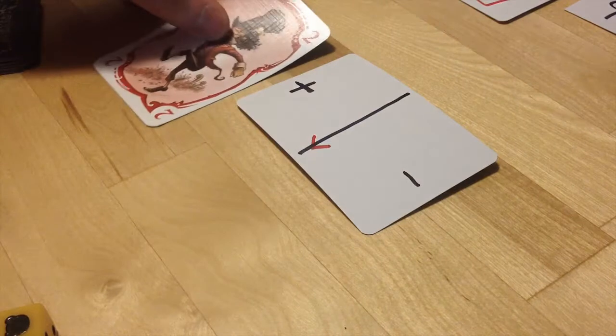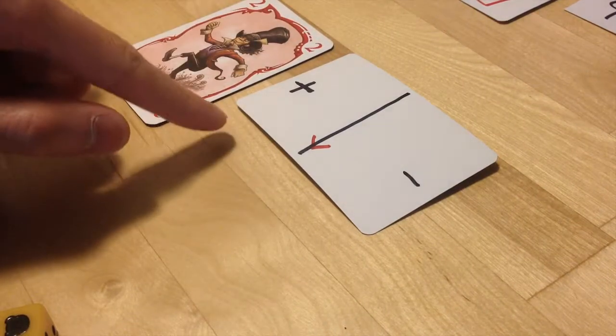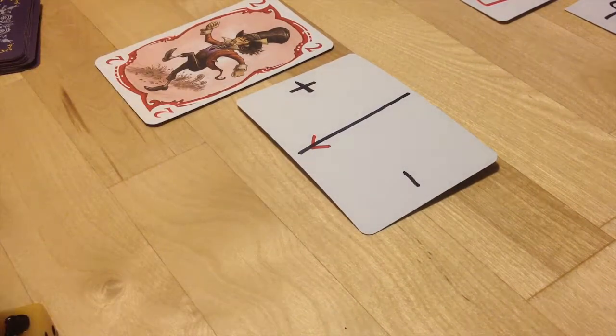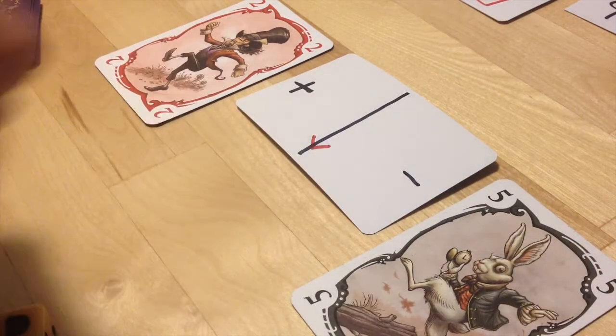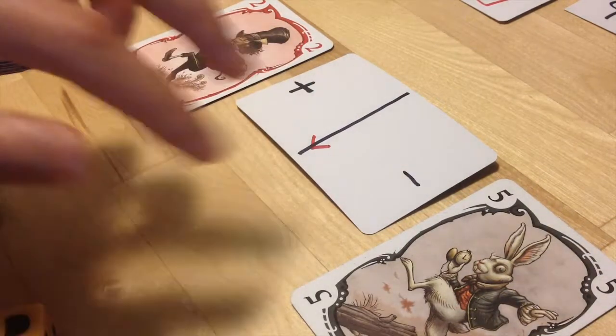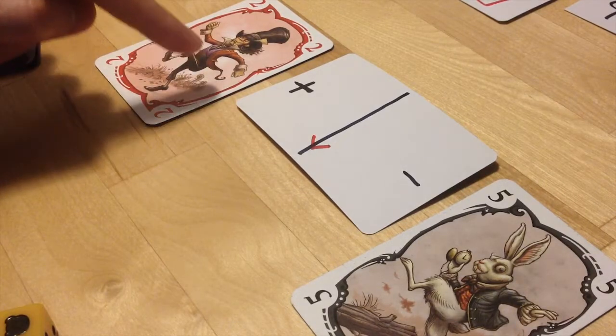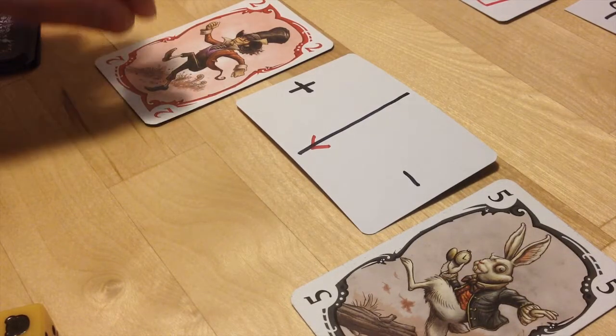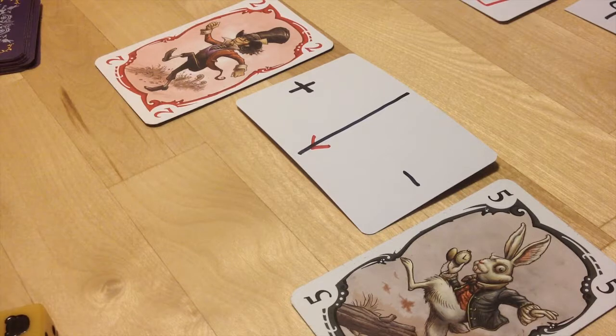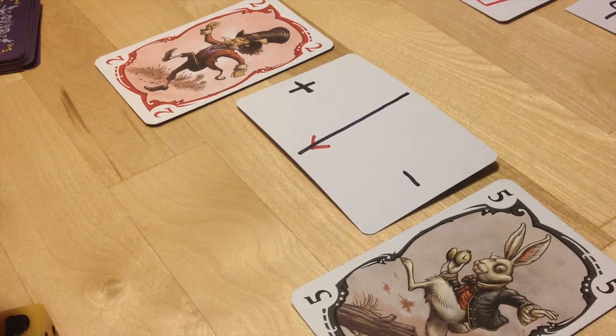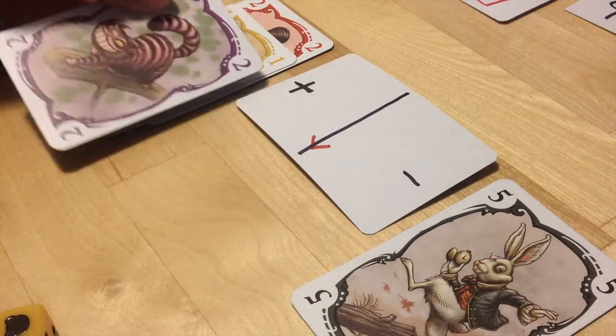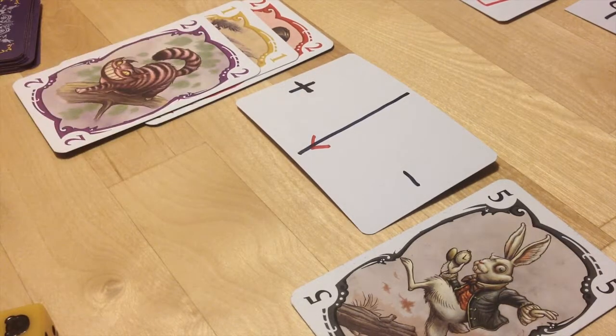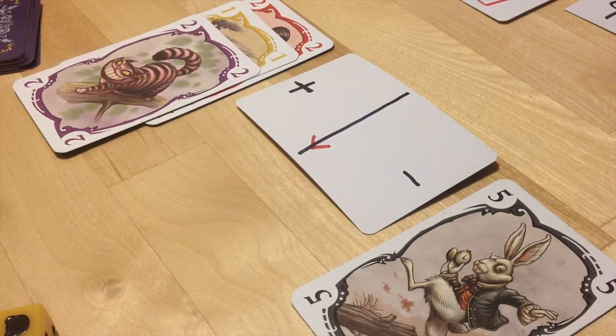On your turn you will be playing cards into either the plus side or the minus side. So here I play a two over here but a five over here, and to balance it out I need to get a value of three in here to cancel it out to make zero. This could be done by, for example, adding a two and a one. At this point I have balanced, and what do I do?